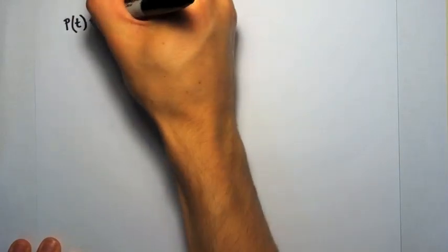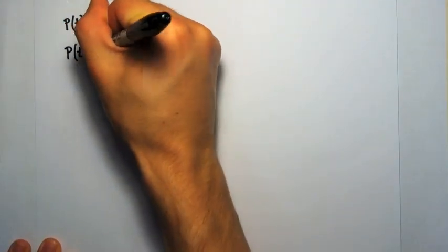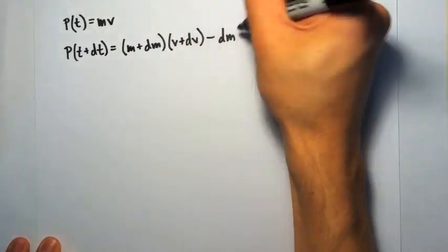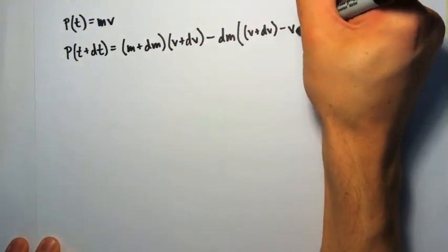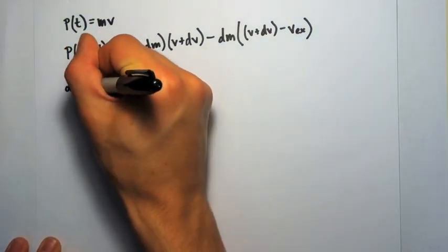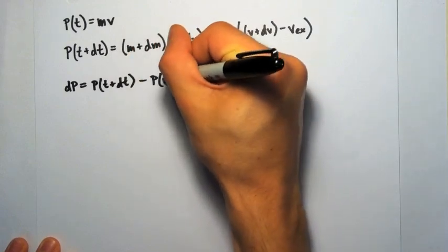Again, using conservation of momentum, at time t the momentum is mv, and at time t plus dt it is what you see there. The term on the right is the momentum of the ejected mass in the exhaust, and the speed term is just the speed relative to the speed of the rocket.